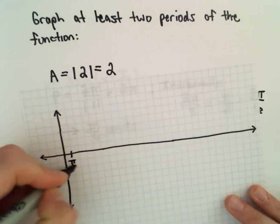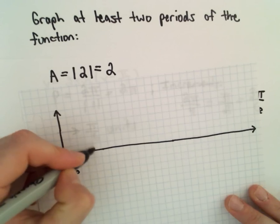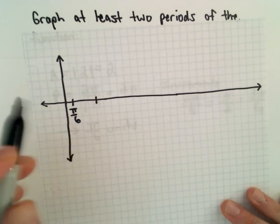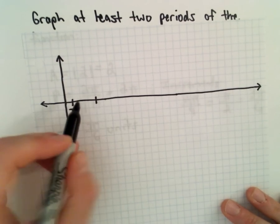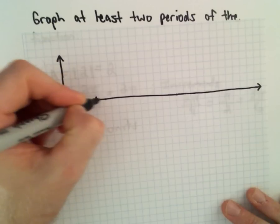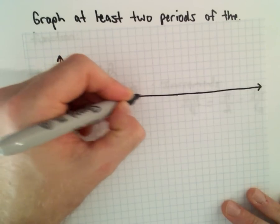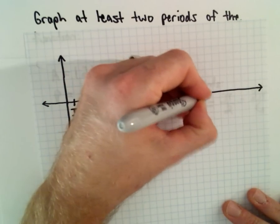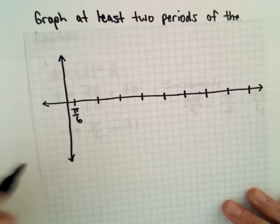Let's make that the point pi over 6. And then we're going to go 3 pi over 6 to get to my next increment.